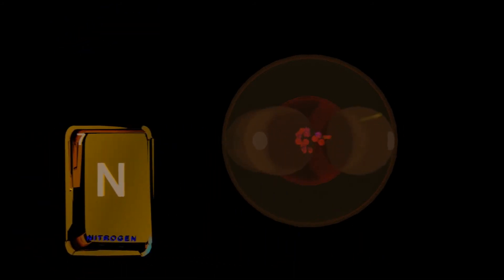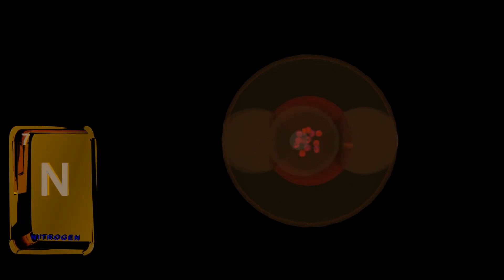Nitrogen, symbol n. With the atomic number of seven, we add another proton. An atomic mass of approximately 14 will have to add another neutron. Nitrogen will have seven electrons. To recap, two electrons in the 1s shell, two electrons in the 2s, and two electrons in two perpendicular p orbitals.